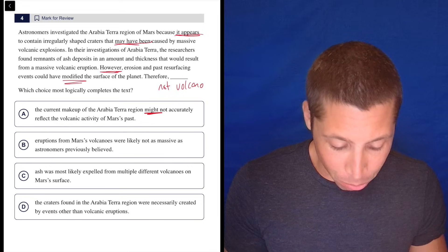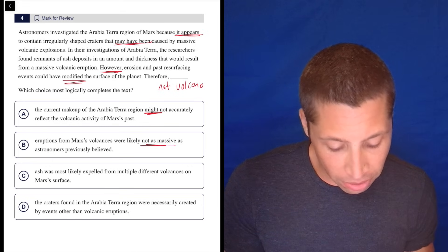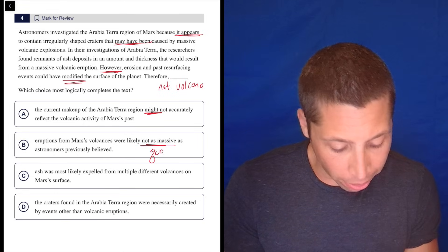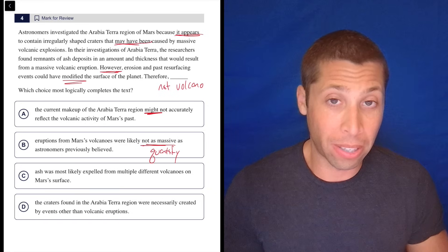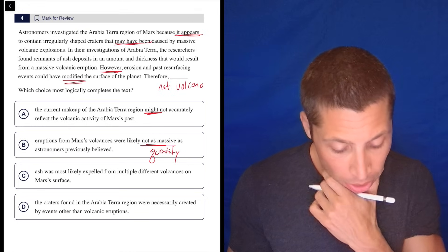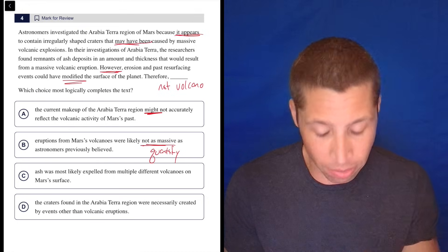Eruptions from Mars' volcanoes were likely not as massive as astronomers previously believed. Well, this is kind of getting to just like the size. I don't – this is almost a quantifier. Like I don't think we're talking about the size of the eruption is in doubt. I think it's whether there is one is in doubt. They're not talking about the size though. So this quantifier idea doesn't really appear.